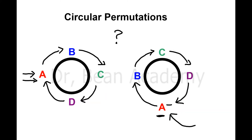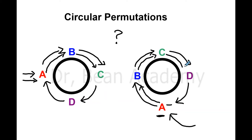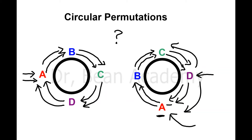The relative positions of the letters are the same. If I start from A and go clockwise, I first meet B. In both figures, going clockwise from A leads to B, from B leads to C, from C to D, and D back to A. Their relative positions are identical, so they are not two different permutations.